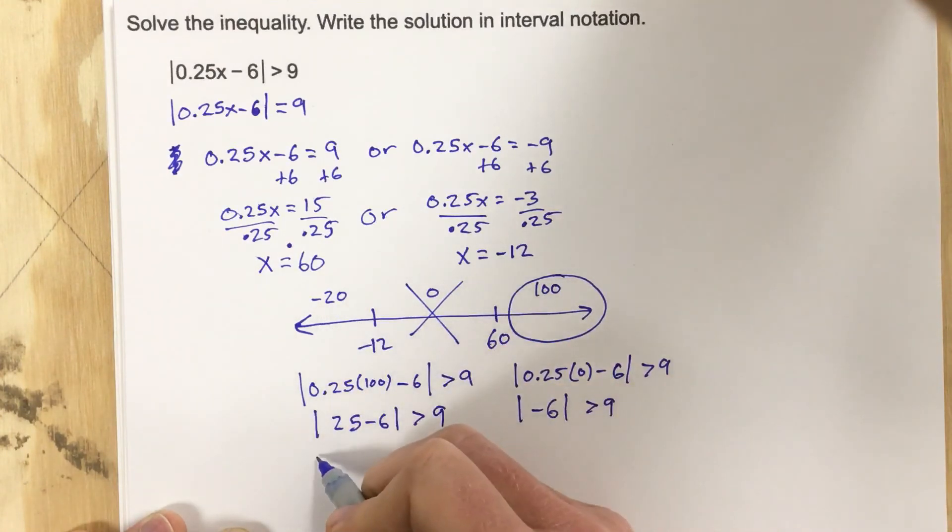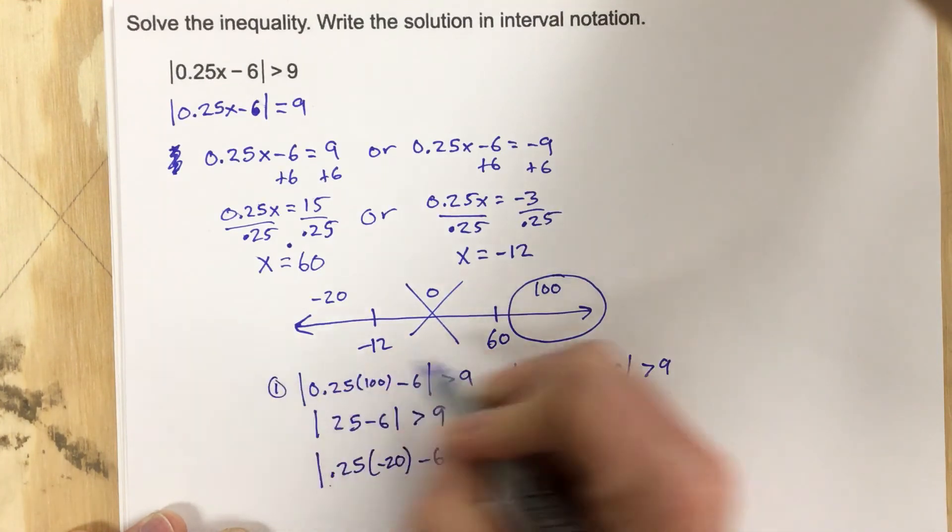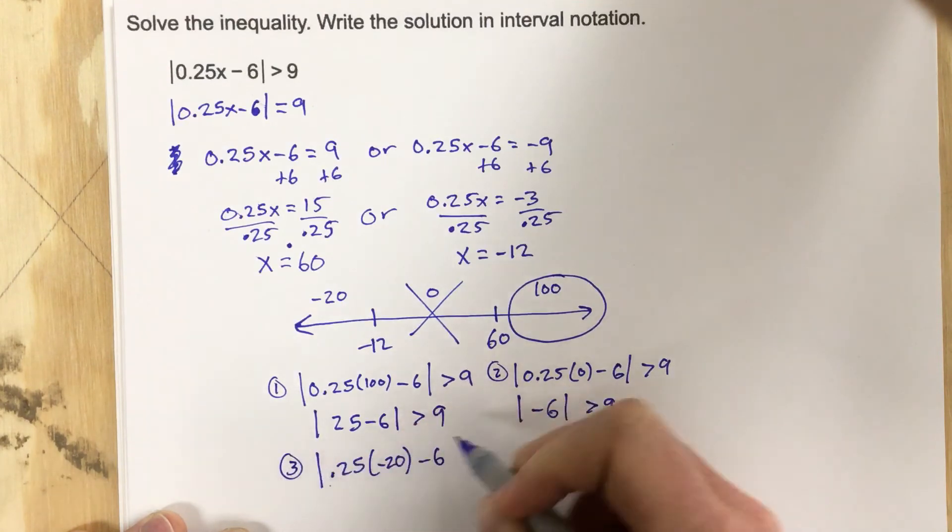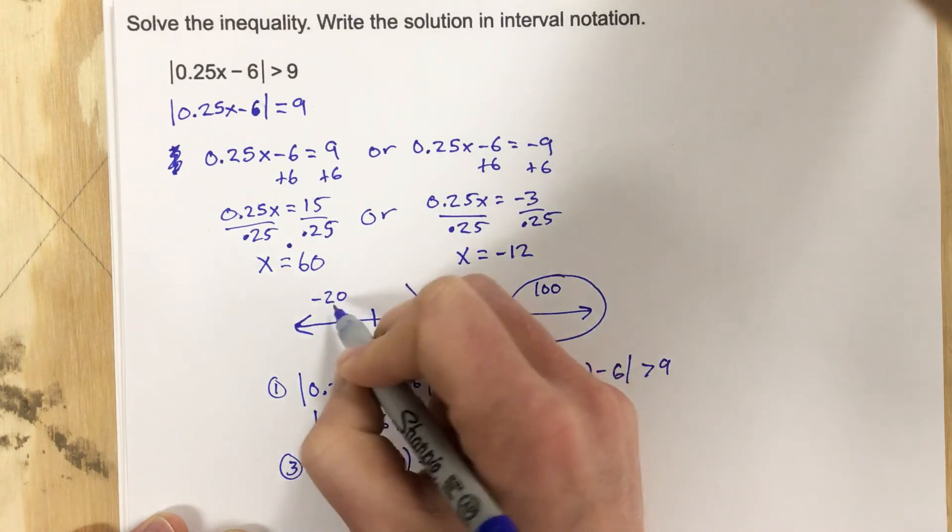And finally, I plug in negative 20. I get the absolute value of 0.25 times negative 20 minus 6, and I'm going to mark these so you see 1, 2, this is my third one, and that's greater than 9. When I multiply that, basically a quarter of negative 20 would be negative 5 minus 6, absolute value, greater than 9. Well, you see you get negative 11 absolute value, that's 11, that's greater than 9. These work as well.